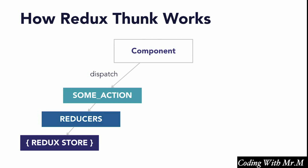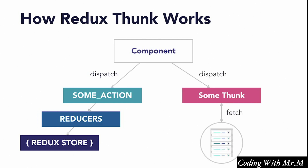So what this looks like is that our components can dispatch a regular Redux action, which goes straight to the reducer and makes the relevant changes to the store, or our components can dispatch a Thunk that performs whatever async or conditional operations we want, and then dispatches its own Redux actions based on the result of those operations.